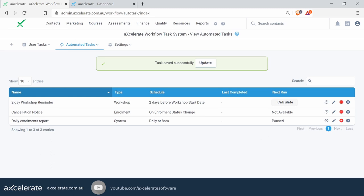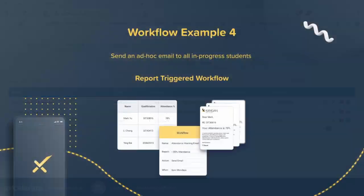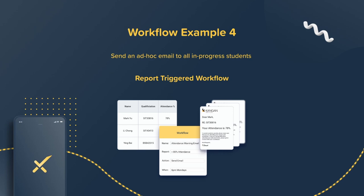That wraps up the third workflow. Let's look at our final workflow setup of the day — this will be a more complicated workflow. So far we've been looking at things using triggers within the workflow engine or just sending off a saved report. In this one, we're going to be looking at a unique trigger called 'Report Row Event'.